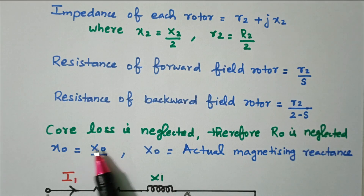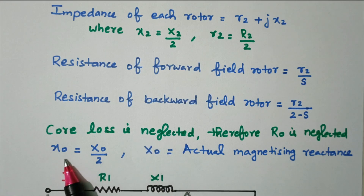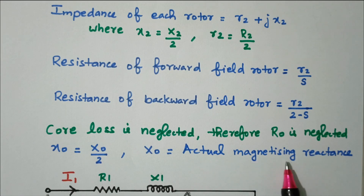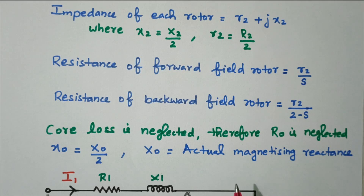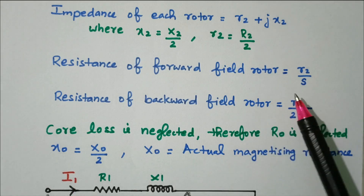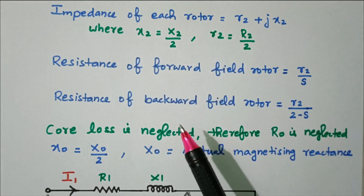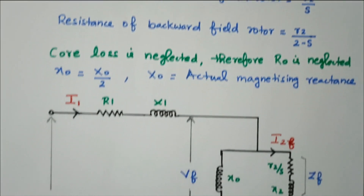Since core loss is neglected, r0 is absent. We have only x0, where x0 is the actual magnetizing reactance. So we have stator impedance z1 equal to r1 plus jx1, then x0 the magnetizing reactance, and then r2 and x2 for the rotor. Based on these, we can draw the equivalent circuit.